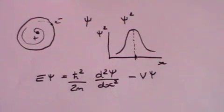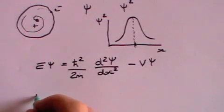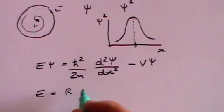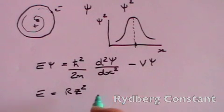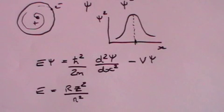We showed that there is a solution to this equation which actually comes out to say that the energy of the electron is equal to R, known as the Rydberg constant, times z squared, where z is the number of protons in the atom, divided by n squared, where n is an integer.